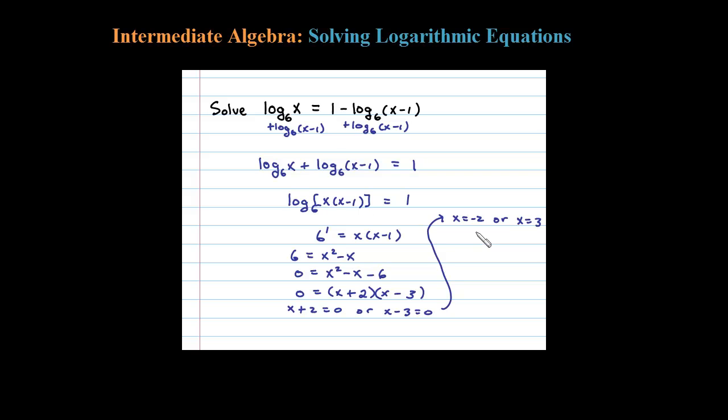When I substitute negative 2 back into the original I'll have log base 6 of a negative number. The argument of a logarithm can't be negative, so this is an extraneous solution. I'm going to throw that away.